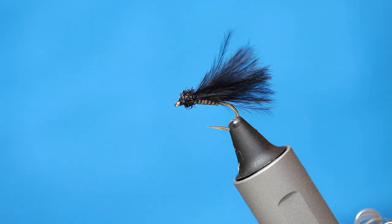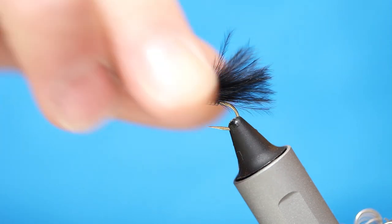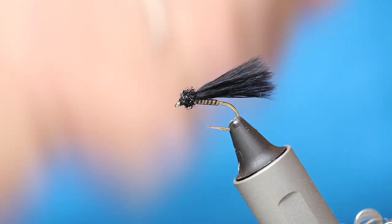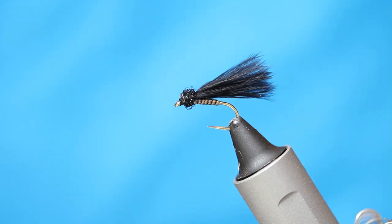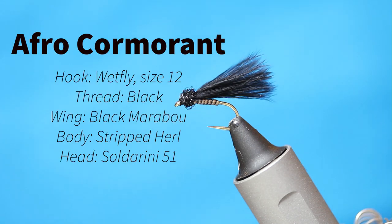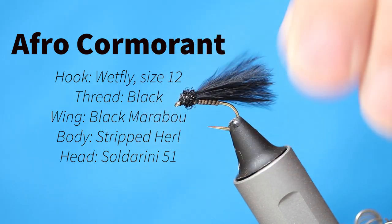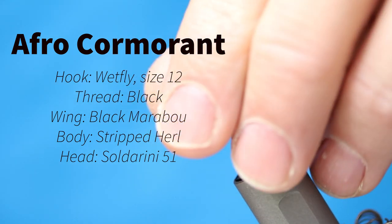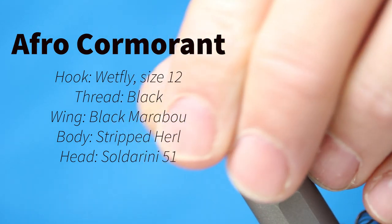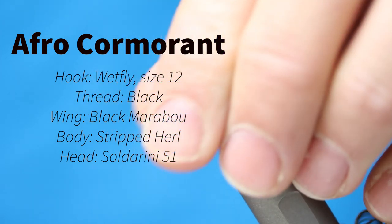So I've got here a delicate little fly, but it's one that's served me well in small still waters and the larger reservoirs when things get a little bit tough. It's just a variation of the cormorant, but I just like that little bulbous head. It's just another trigger for it, that silhouette. It just looks the part, like an insect with that big bulbous head.